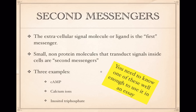Second messengers are molecules that are not proteins. The first messenger is the ligand or extracellular signal molecule that first bonds to the receptor on the cell membrane. Second messengers are small non-protein molecules that carry or transduce signals inside cells. There are three examples your book illustrates: cyclic AMP, calcium ion channels, and inositol triphosphate. You need to know one of these well enough to use as an example in an essay. I'm only going to go over the first one, cyclic AMP. You can refer to your book for how calcium ions and inositol triphosphate work as second messengers.